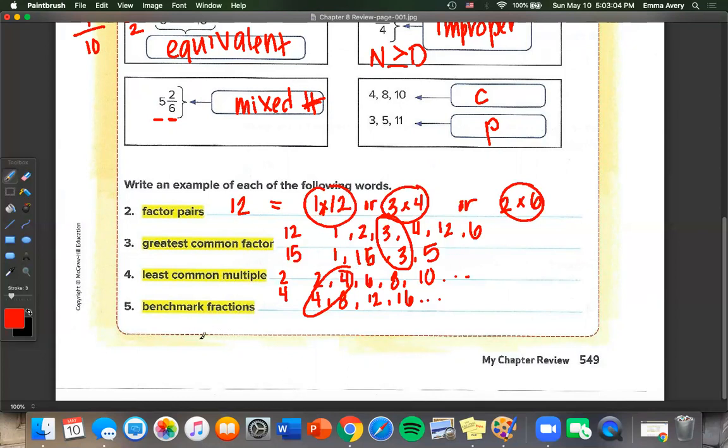And benchmark fractions, those are things like 1 half, 1 third, and 1 fourth, where it's easy for us to compare fractions on either side of these. I know that 1 fourth is less than 1 half, and that 3 fourths is greater than 1 half. So it's easy for me to visualize what is bigger than 1 half. So that's what we call benchmark fractions.